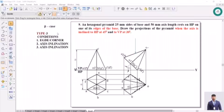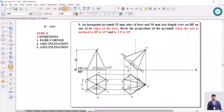Coming to the next problem, it is a beta case problem since in the last condition the VP inclination appearance is not given. The problem here: a hexagonal pyramid 25 mm sides of base and 50 mm axis length rests on HP on one of its edges of the base. Draw the projection of the pyramid when the axis is inclined to HP at 45 degrees and to VP at 30 degrees.